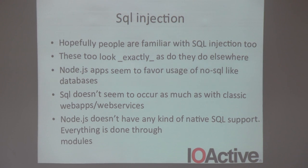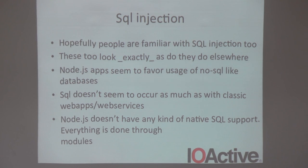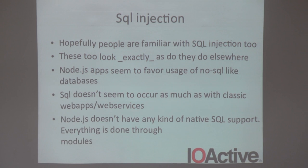Another common one is SQL injection. SQL injection bugs in Node look exactly the same as anywhere else — no surprises. One thing you'll see is that because Node.js is a typical web 2.0 language, there's an aversion to SQL, so a lot of apps go to NoSQL — CouchDB or MongoDB. Those come with their own problems but don't really have SQL injection. So there's relatively little SQL injection in Node.js, though it's not impossible.